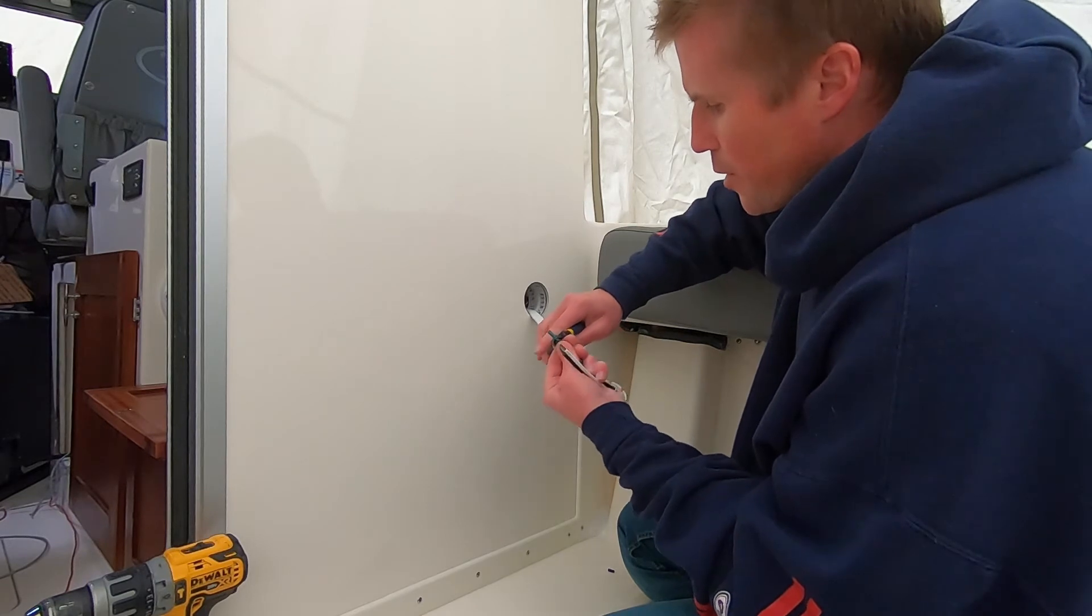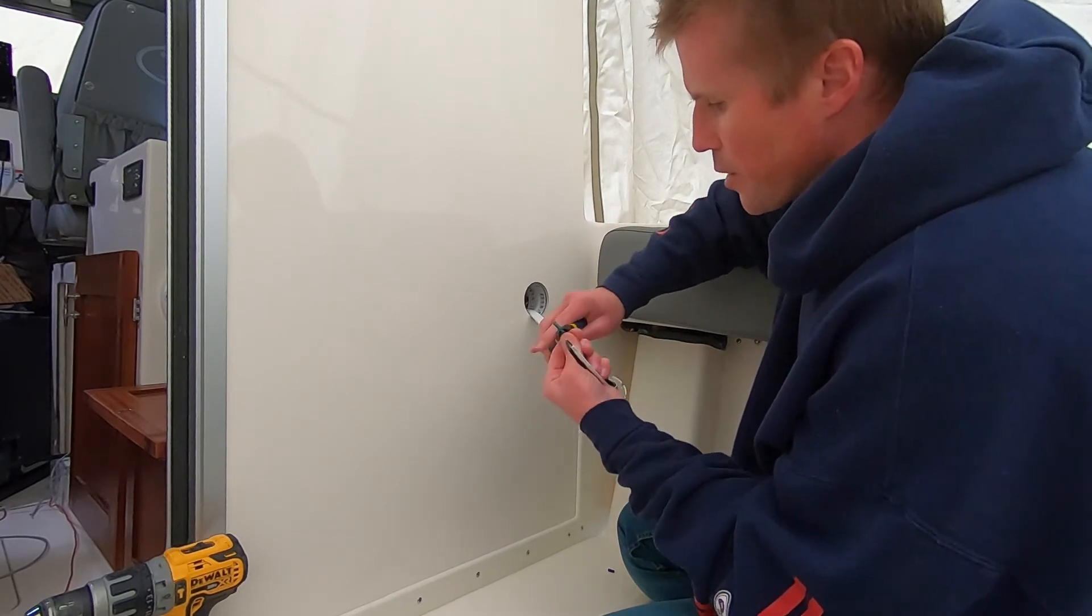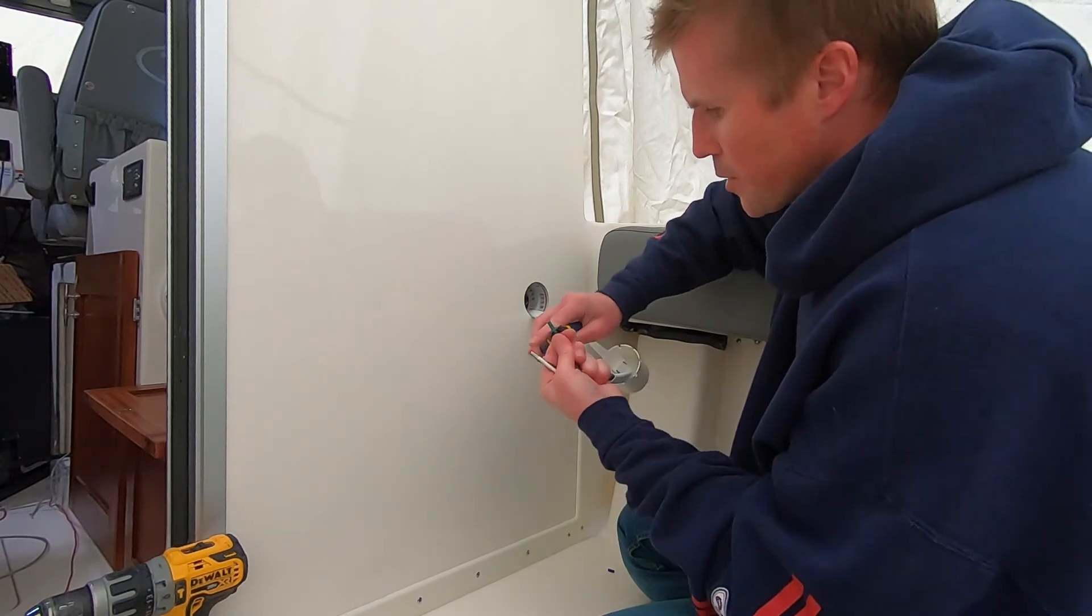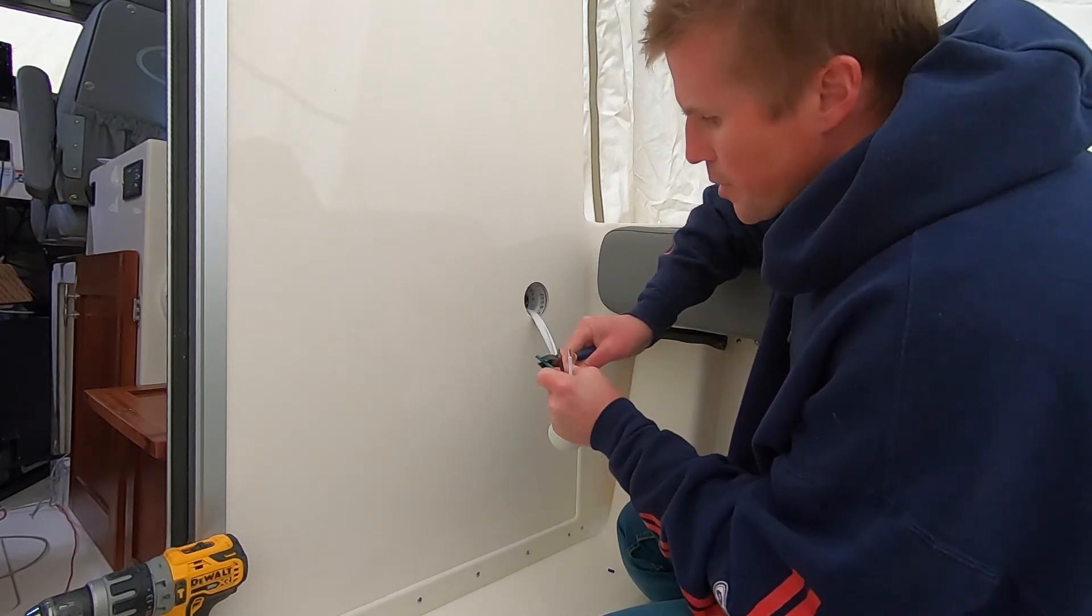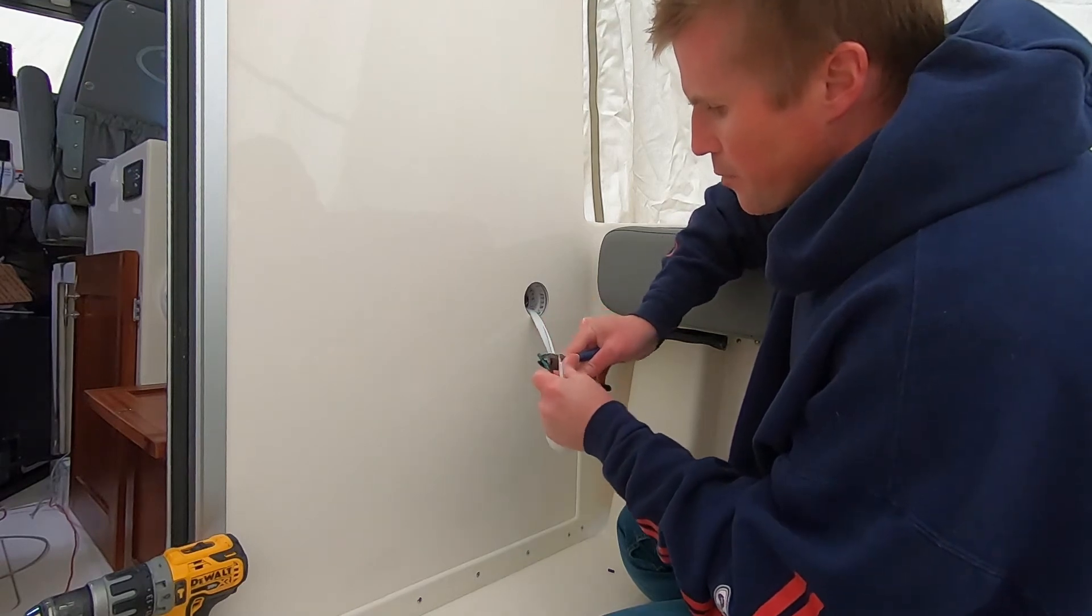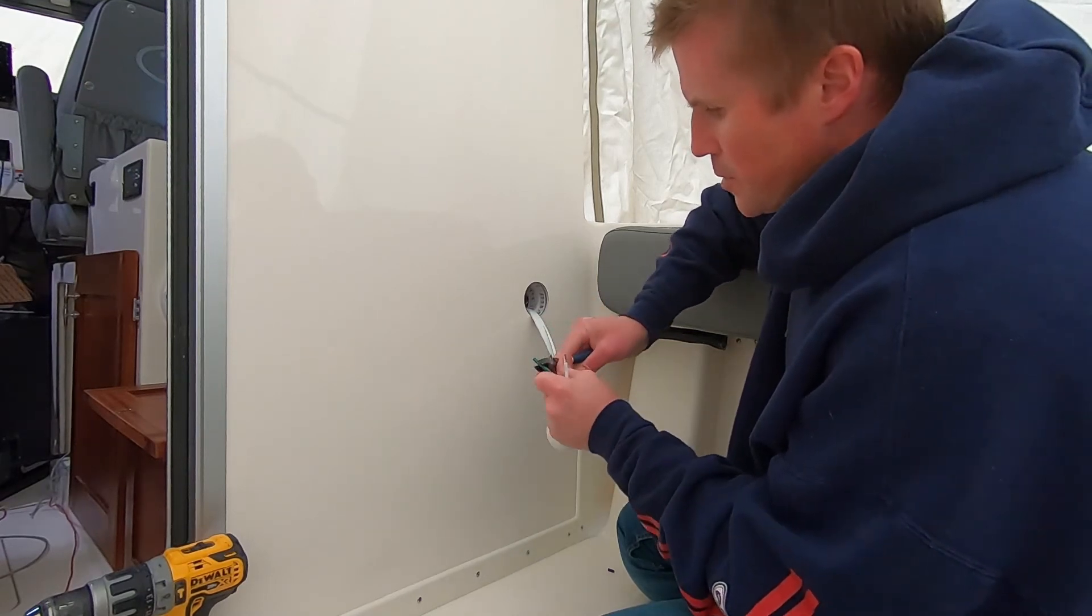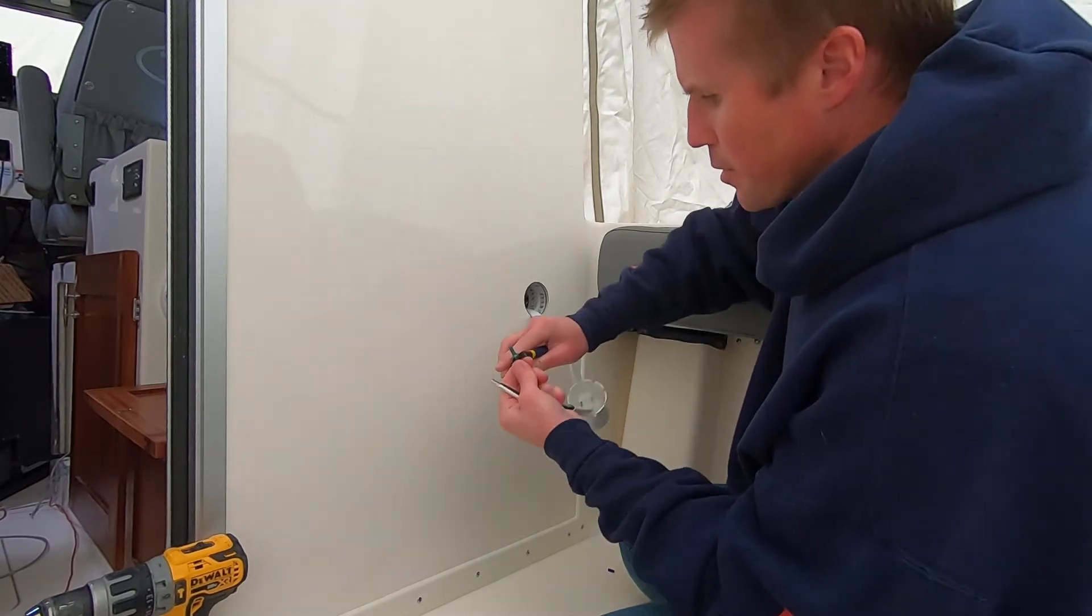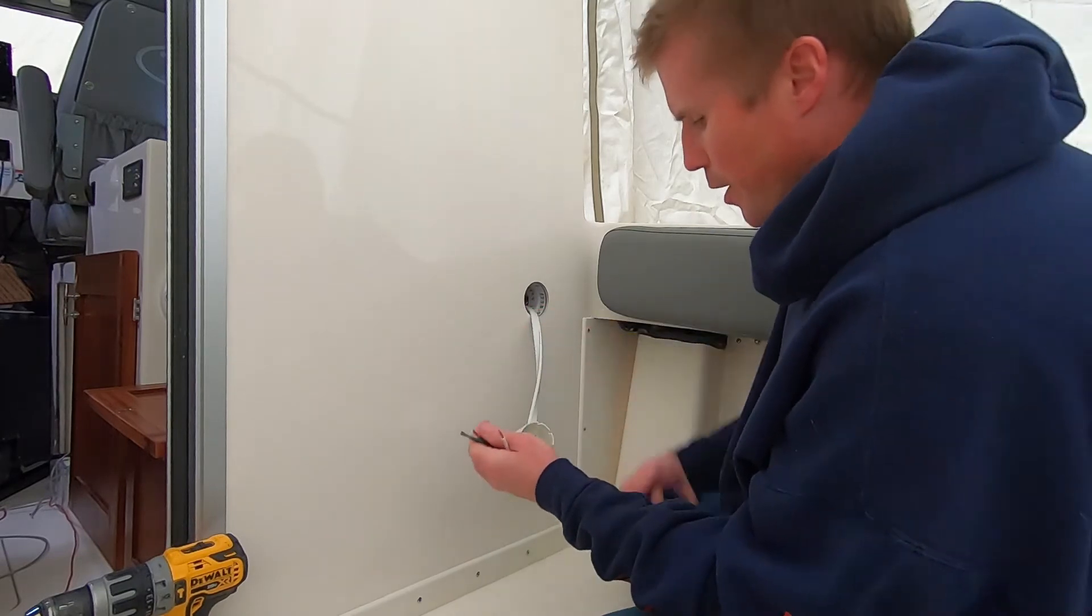The easiest thing to do is just to go on there and download that app. Then you enter in how many feet you're going to be running, how many amps, things like that, and it'll tell you what size, what gauge you need. A lot of the things that you're going to hook up in the directions, it's going to tell you what size you need to run and what size fuse, things like that. So that makes it easier.